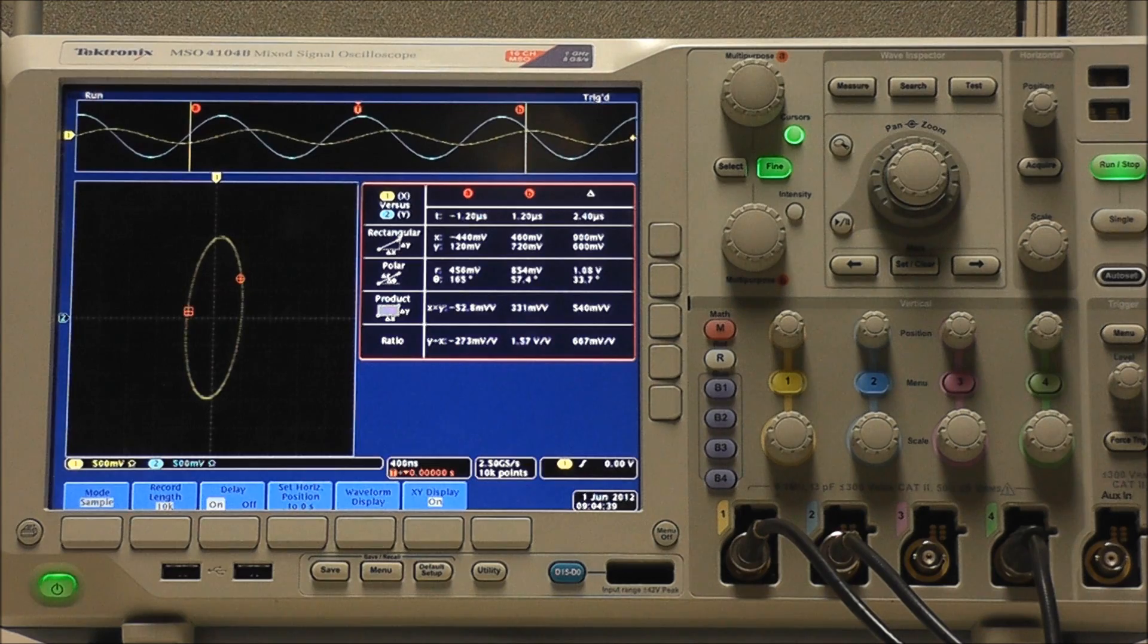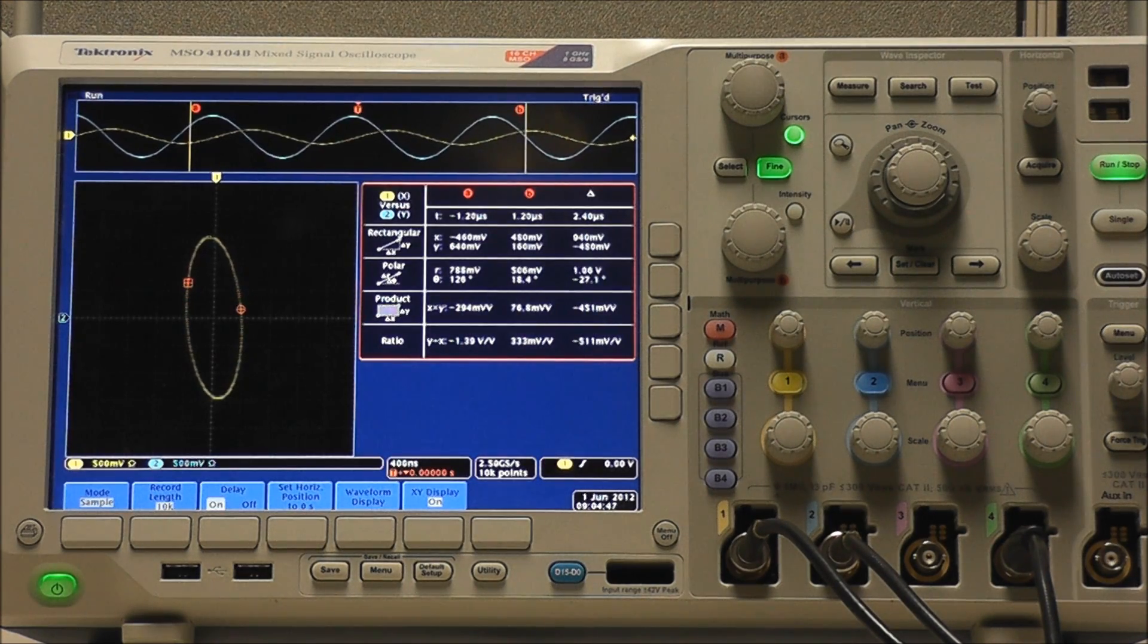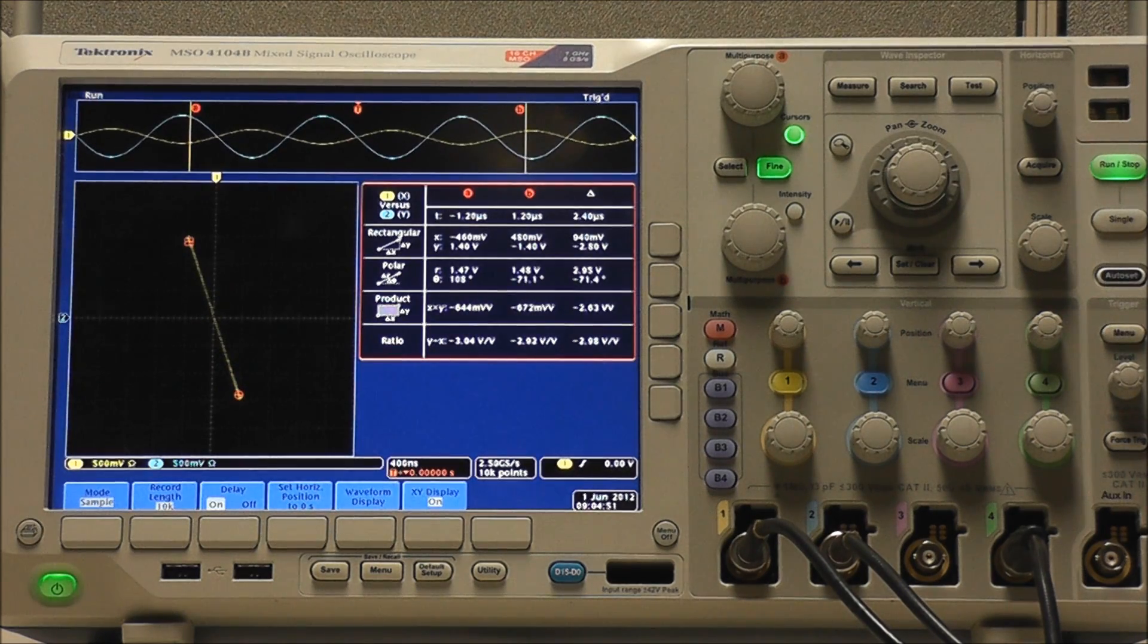As we move up to 90 degrees, we don't have a circle this time, but rather an ellipse. And we would see this again at 270 degrees. And as we move to 180 degrees, we have our original line reflected across the y-axis again.